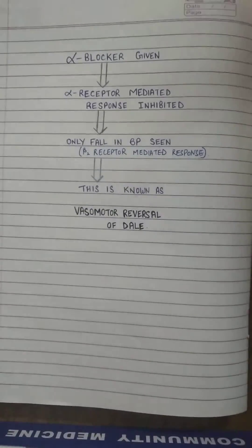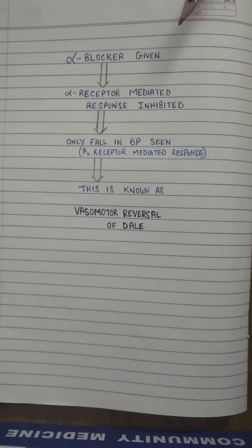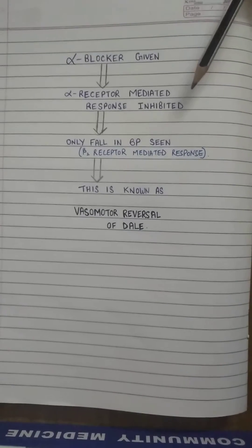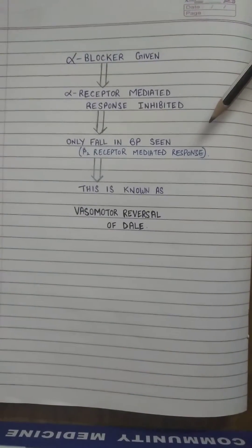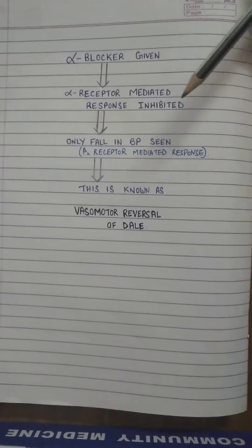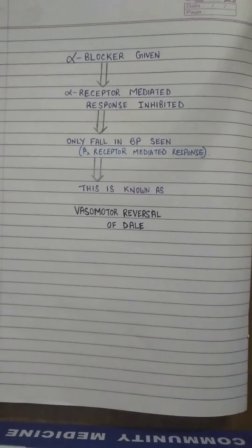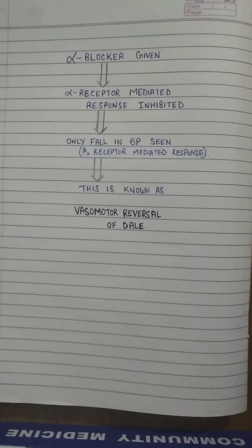Now, when an alpha blocker drug is given, the alpha receptor mediated response is inhibited. So only fall in blood pressure is seen, which is a beta receptor mediated response. This is known as vasomotor reversal of Dale.